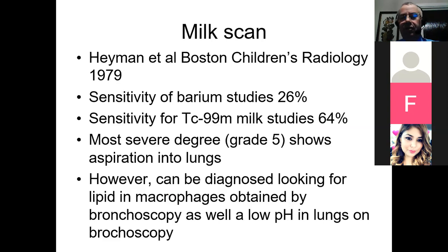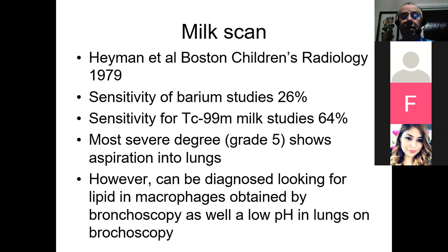A review from Boston Children's Hospital demonstrated that the milk scan is more sensitive than barium, because barium or gastrografin is quite thick and doesn't reflux as much. Grade five, the worst grade, involves reflux into the lungs. There are other ways of detecting reflux now — you can look for milk lipids in macrophages obtained by bronchoscopy, or use pH monitors. Small baby bronchoscopies tend to be the more common approach nowadays, making milk scans less popular, but some centers still do them, and it is a quite nice non-invasive test.